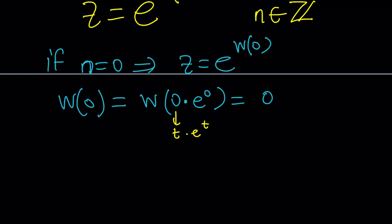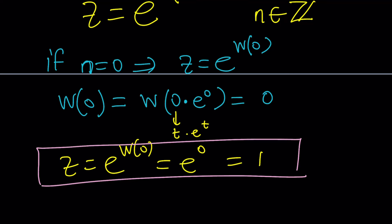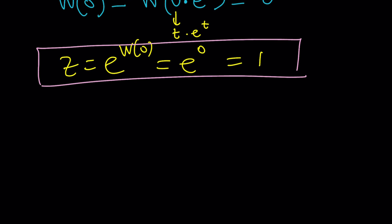So that's cool because W of zero is zero and z is equal to e to the power W of zero which is e to the power zero which is one. Remember at the very beginning we talked about an obvious solution and that happens to be z equals one.